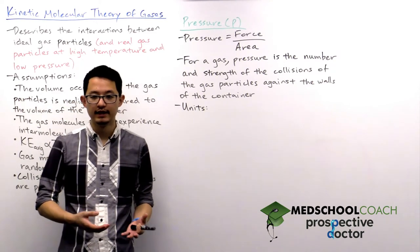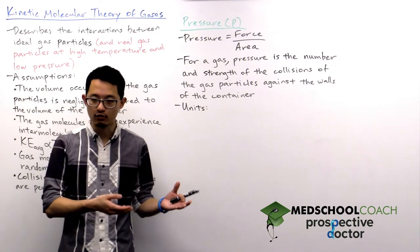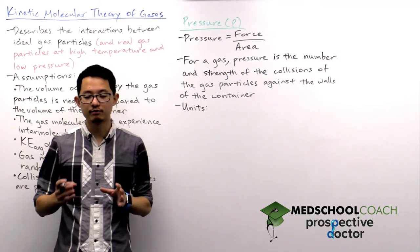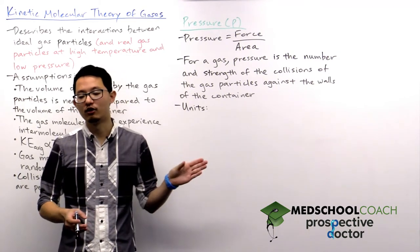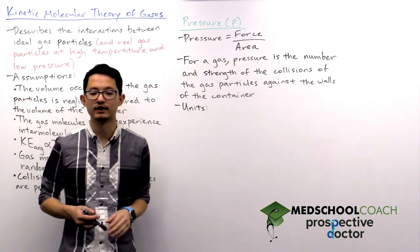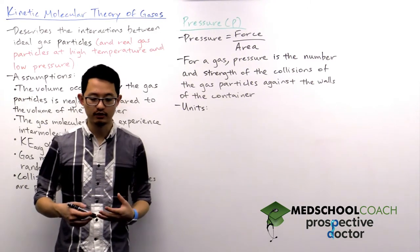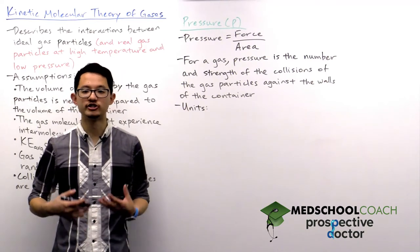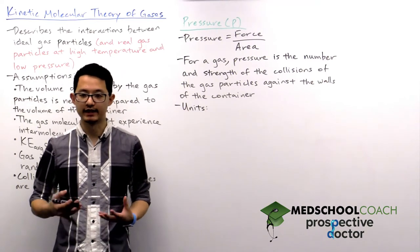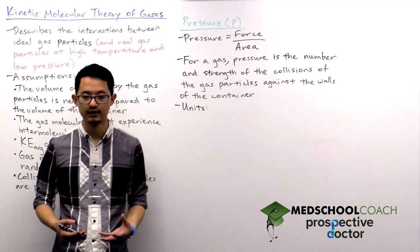Well, remember when we're looking at gas particles, they are moving randomly in the container, so inevitably at some point they're going to collide against the walls of the container. And when they collide against the walls of the container, that gas particle exerts a force over the area of the wall that it collided with. So essentially when we're talking about the pressure of a gas, we're looking at the number and strength of the collisions against the walls of the container.